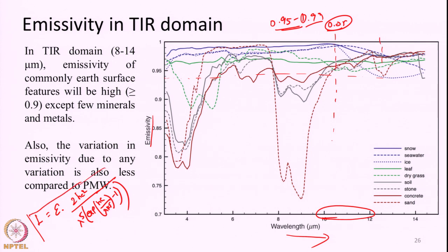In TIR, emissivity of different features does not vary much, but temperature can vary significantly — for example, a water body and a building within a pixel may be at very different temperatures. The influence of temperature on total radiance is therefore quite high in TIR remote sensing, making it better to calculate temperature from that wavelength.